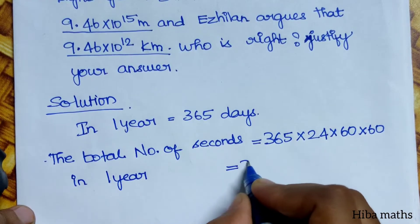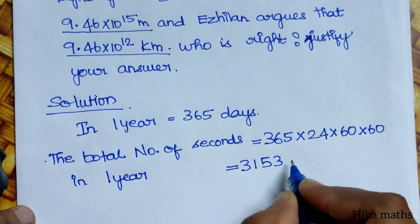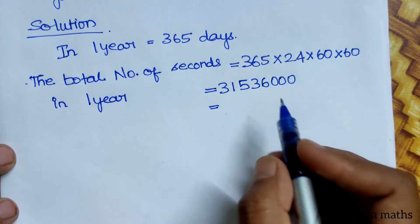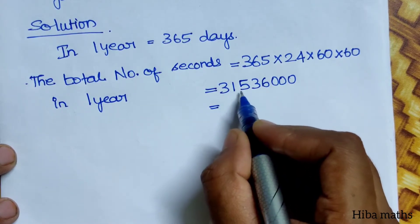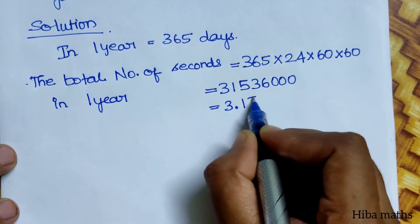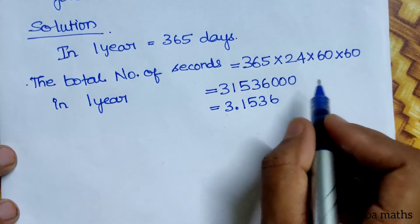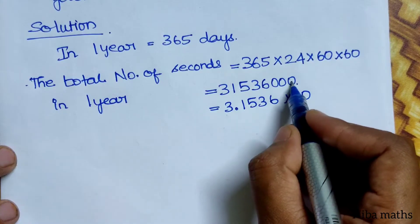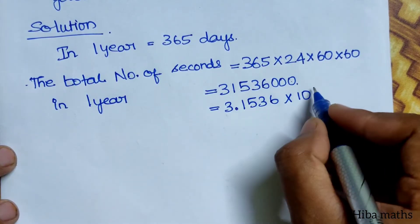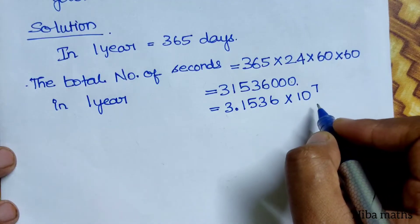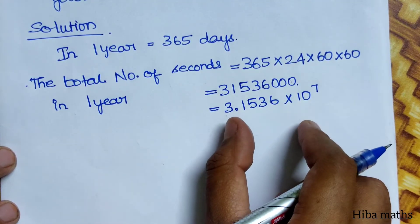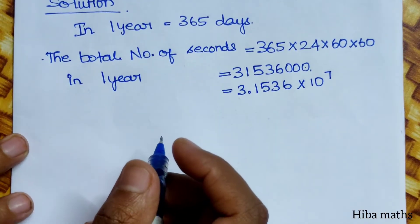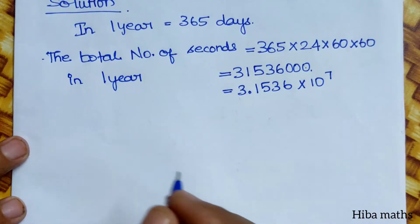Multiplying the time units: 1 hour equals how many seconds. This gives us 1 year expressed in seconds. Now we can work with the light speed — the distance traveled by light in one year.